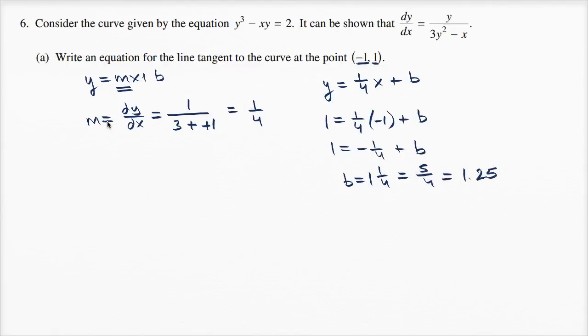We could write it any of those ways. The equation for the line tangent to the curve at this point is y = (1/4)x + 5/4, and we're done.